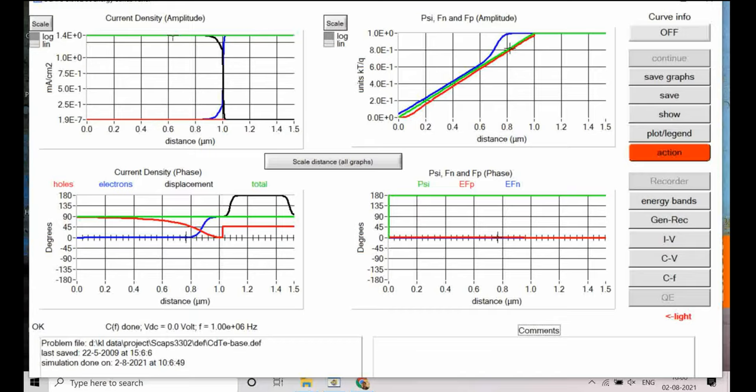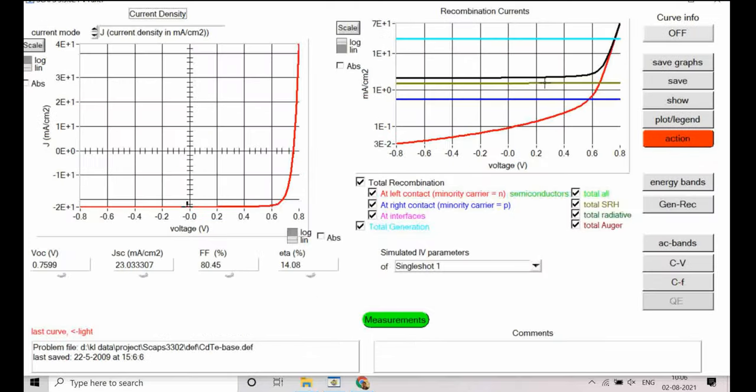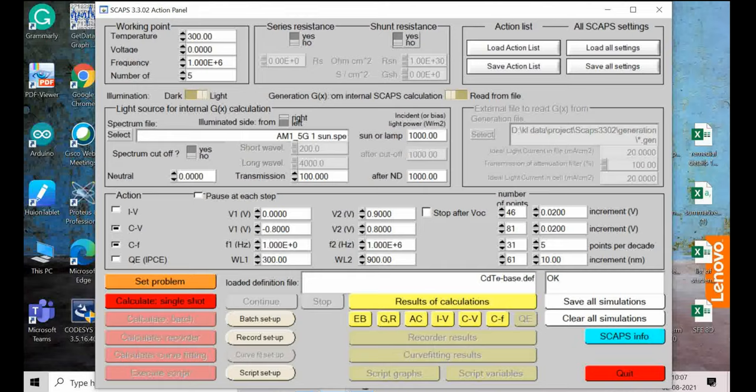Now I will go to. So when we have simulated CV and CF it will always give IV also. So IV even though we have not simulated IV, because of the time we have scanned from minus 0.828, it is already giving us IV curve.